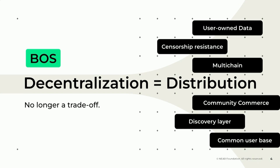One of the biggest goals we had with BOS, and also one of the things we find most exciting, is that we've actually solved some of the trade-offs that makes it so decentralization can actually increase your distribution and vice versa. Typically, the more decentralized your solution is, the harder it can be to get distribution. In the case of BOS, the more distribution we can achieve by getting more user-facing applications to integrate with BOS, and getting more decentralized applications to build for BOS, we can actually increase both distribution and decentralization.